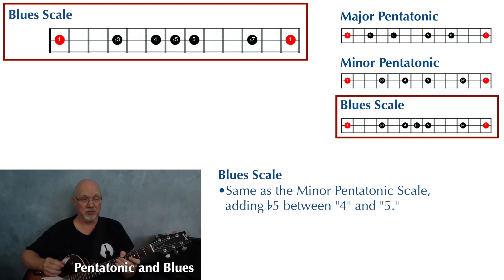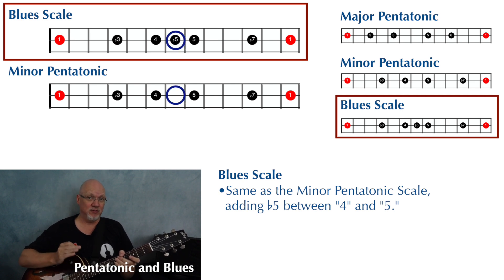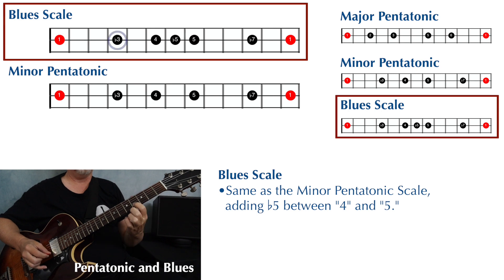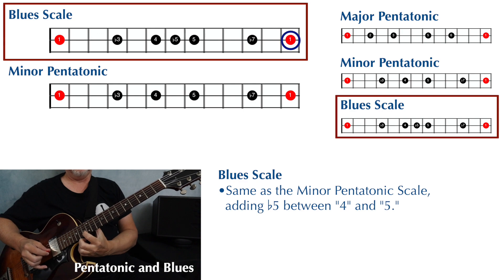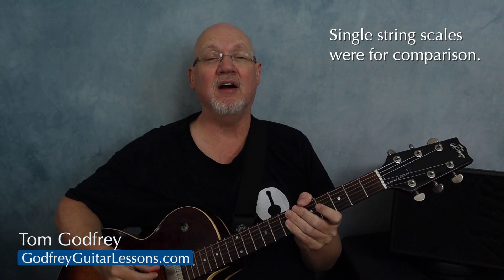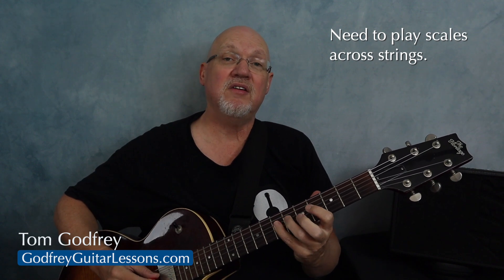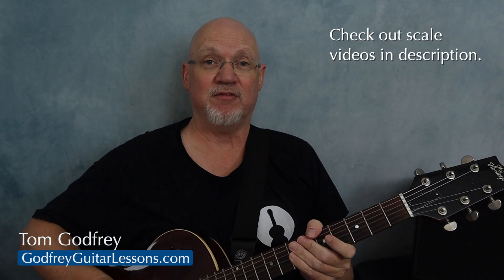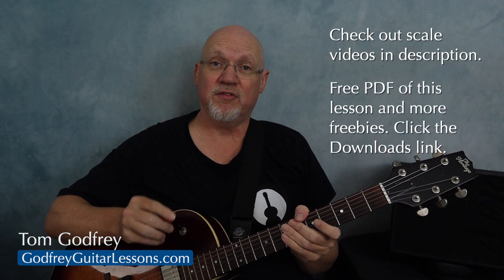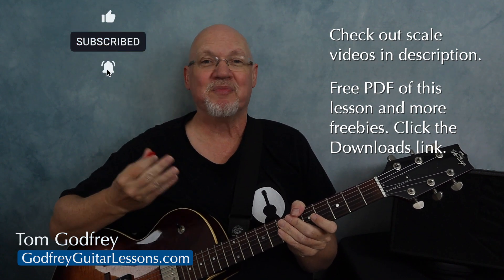The blues scale is very similar to the minor pentatonic scale — in fact, it is the minor pentatonic scale, except we add a flat five between the four and the five. We looked at these scales all along one string to make them easier to visualize and compare, but if you want to put these scales to use, you need to be able to play them moving from string to string. Check the description for a free PDF of this lesson plus other free downloads, and please subscribe.